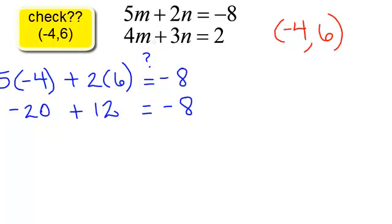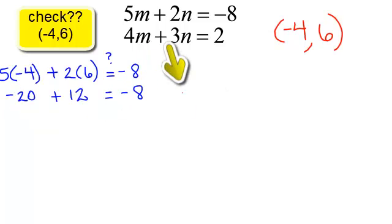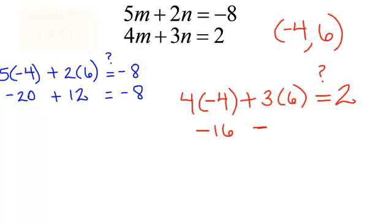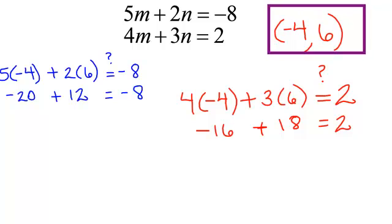This answer should also work in our other equation, which was 4m plus 3n equals 2. So I will have 4, and m is negative 4, plus 3 times n, which you told me was 6. And the question is, does it equal 2? 4 times negative 4 is negative 16, plus 3 times 6 is 18, and yes, indeed it does. It does equal 2. So our answer, the point negative 4, 6, is the solution to that systems of equation.